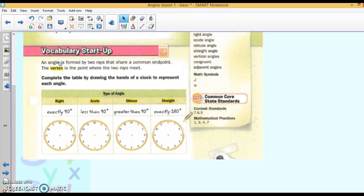An angle is formed by two rays that share a common endpoint, and the vertex is the point where the two rays meet. A right angle is exactly 90 degrees. So if I draw a right angle, it's going to be 90 degrees. Put that little box in it, that shows us that it's 90.